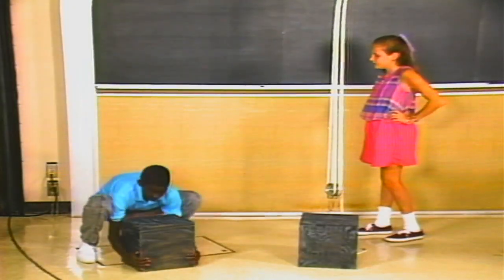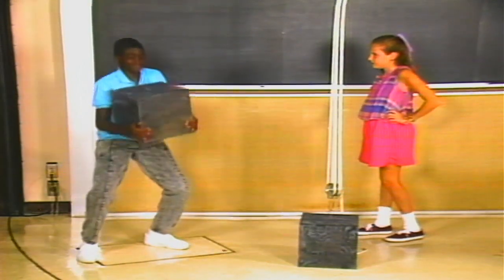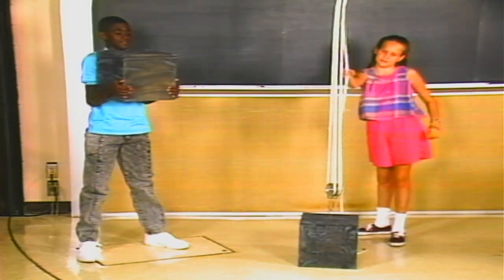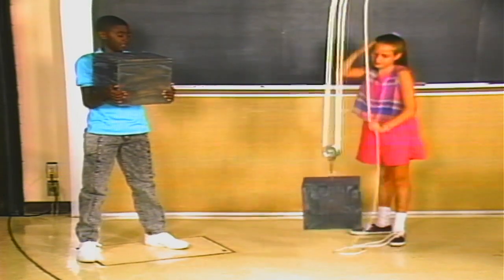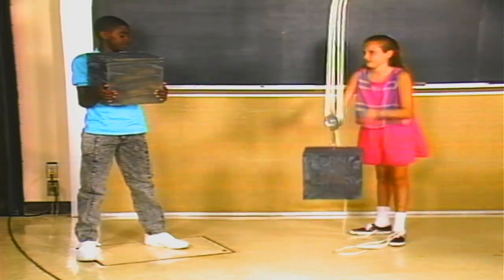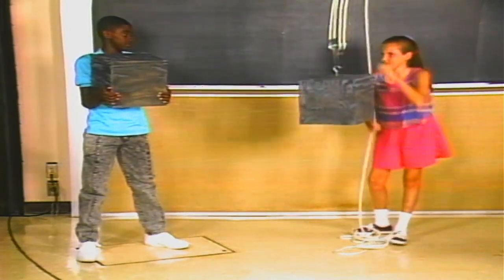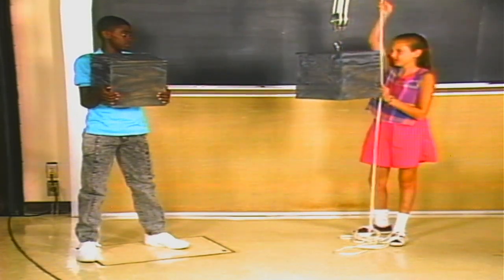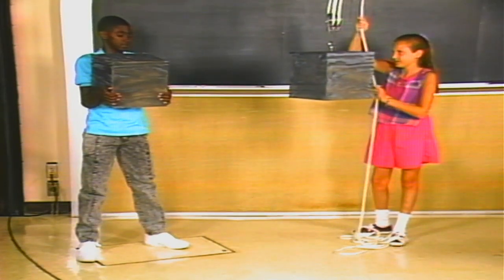Brian puts in 500 joules of energy and does 500 joules of work. Karen puts in 1,000 joules of energy into this machine. In lifting the block from the main menu, you can get training or go to the machine to begin your investigation.